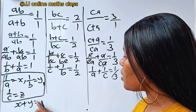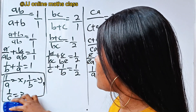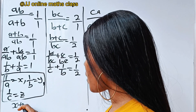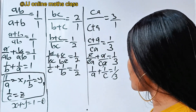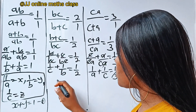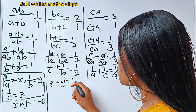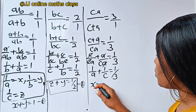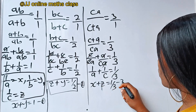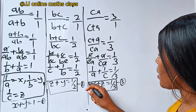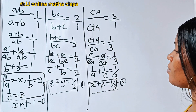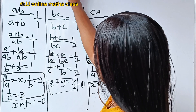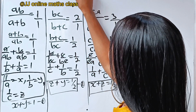So we have x plus y is equal to 1. Let's call this equation 1. For this side, 1 over c is z, so we have z plus y is equal to 1 over 2. Let's call this equation 2. And for this side, we have x plus z is equal to 1 over 3. Let's call this equation 3. So: equation 1 is x plus y equal to 1, equation 2 is z plus y equal to 1/2, and equation 3 is x plus z equal to 1 over 3.